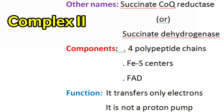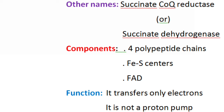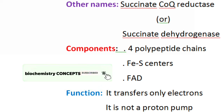Coming to Complex II reactions — the other name for Complex II is succinate coenzyme Q reductase or succinate dehydrogenase. The components include polypeptide chains, iron-sulfur centers, and FAD. The function of this complex is that it transfers only electrons and does not act as a proton pump. The reason is that during electron transfer from FADH2 to coenzyme Q, only a small amount of energy is released — not sufficient to pump protons from the matrix to the intermembrane space.